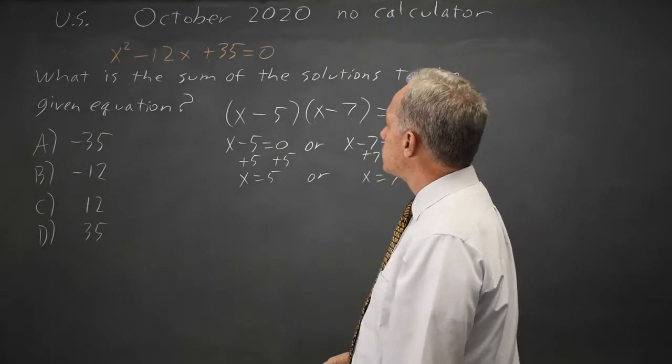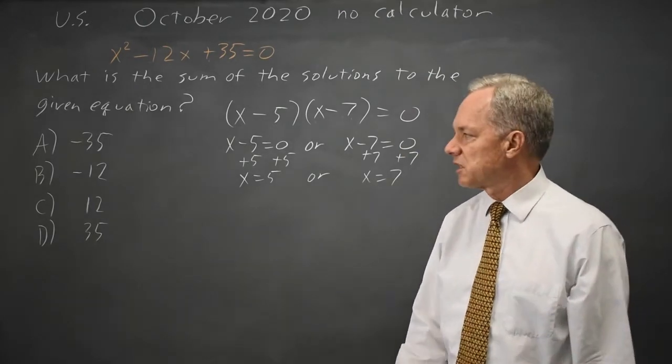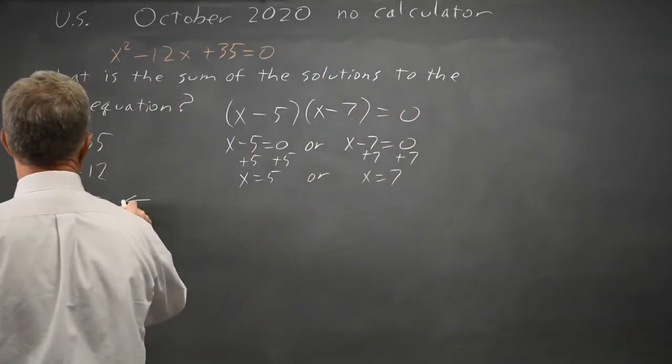Those are the two solutions, and the sum is 5 plus 7 equals 12. Choice C.